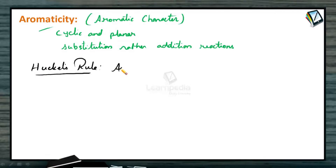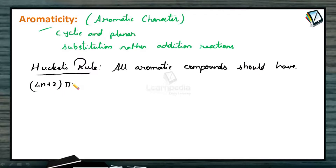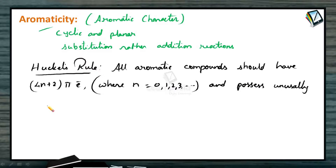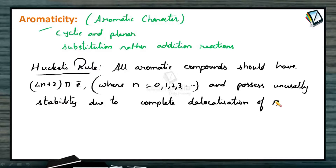According to Huckel's rule, all aromatic compounds should have 4n+2 pi electrons, where n is an integer — that is 0, 1, 2, 3, etc. These compounds should possess unusual stability due to complete delocalization of pi electrons. So aromatic compounds should be cyclic, planar, and possess 4n+2 pi electrons, which gives them extraordinary stability.